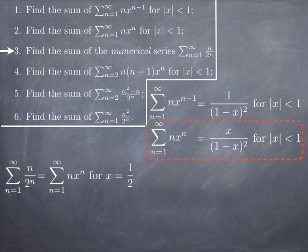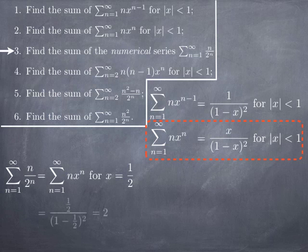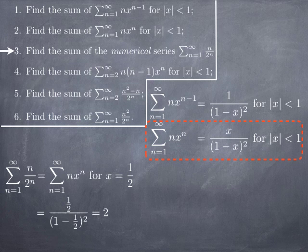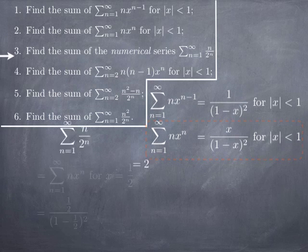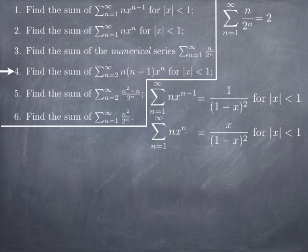We have a formula for this power series that applies whenever x is strictly between negative 1 and 1, which is the case for x = 1/2. Plugging x = 1/2 into x over (1 minus x)² gives (1/2) over (1/2)². Since 1 minus 1/2 is 1/2 and (1/2)² = 1/4, we get (1/2) divided by (1/4), which is 2. So we have found the exact value of this series: 2.